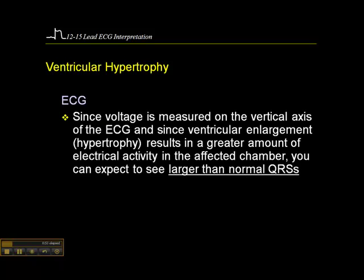In terms of the ECG, since voltage is measured on the vertical axis and ventricular enlargement results in a greater amount of electrical activity in the affected chamber, larger muscle mass means greater electrical activity. You can expect to see larger than normal QRS complexes.